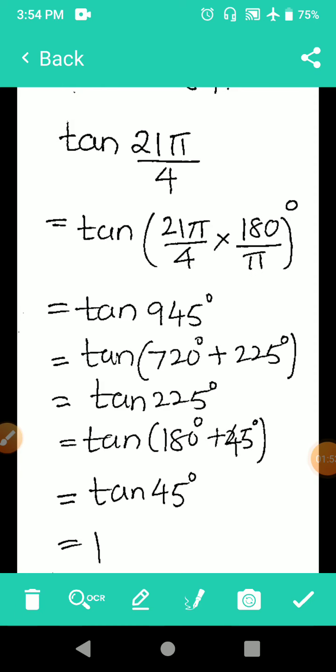Similar example to evaluate tan 21π/4. Now here I am doing the calculations along with the tan. In the earlier example first I calculated the angle and then I found out the value. So tan of 21π/4 into 180/π gives you 945. Now the angle is too large, we can subtract 720 from that, so 720 plus 225. And because 720 is equal to 0.